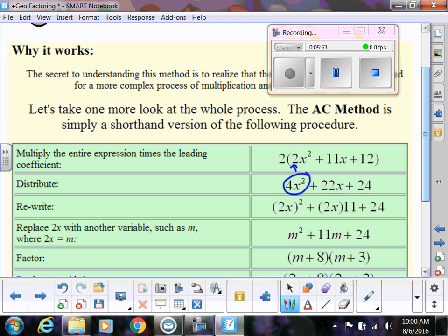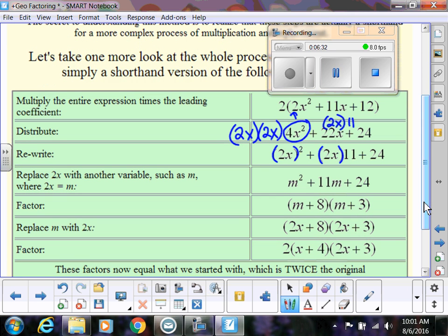The reason we decided to multiply by 2 is so we could do this next step. Instead of writing this as 4x², I'm going to write it as a quantity squared. 4x² is the same as 2x times 2x, so I'm going to write that as (2x)². Same thing here: instead of 22x, I'm thinking of this as 2x times 11. It's just playing around with ways we can write that.